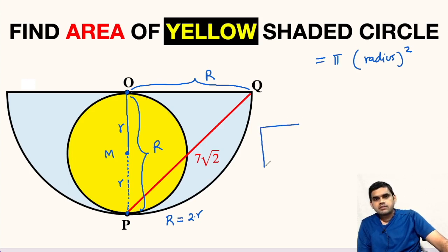Let me draw it outside. This point is O, this point is Q, this point is P and this will be 90 degrees.